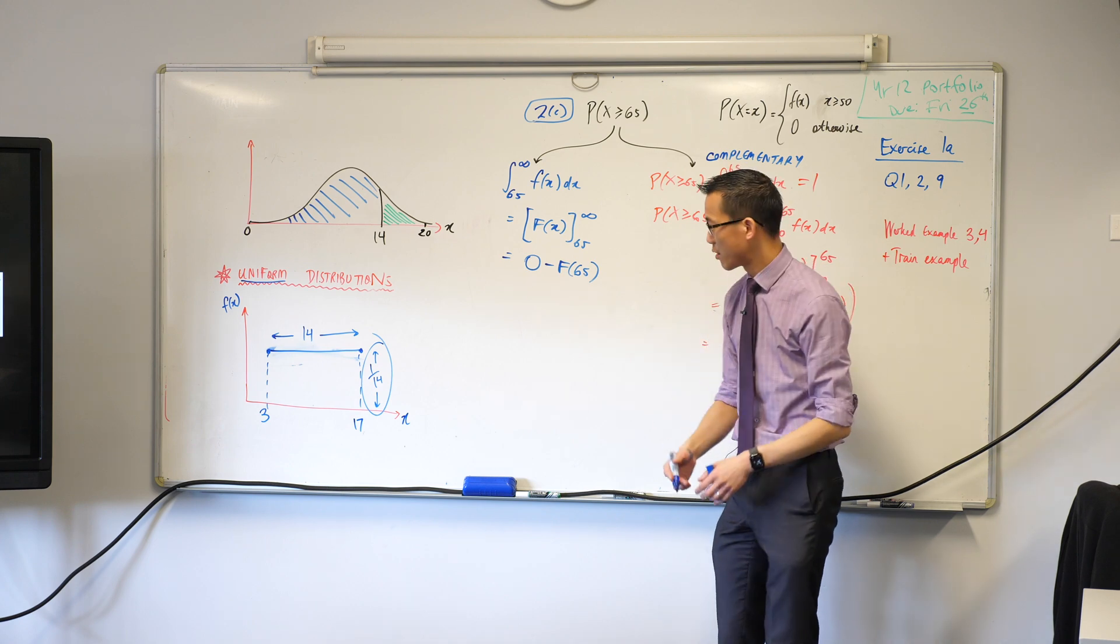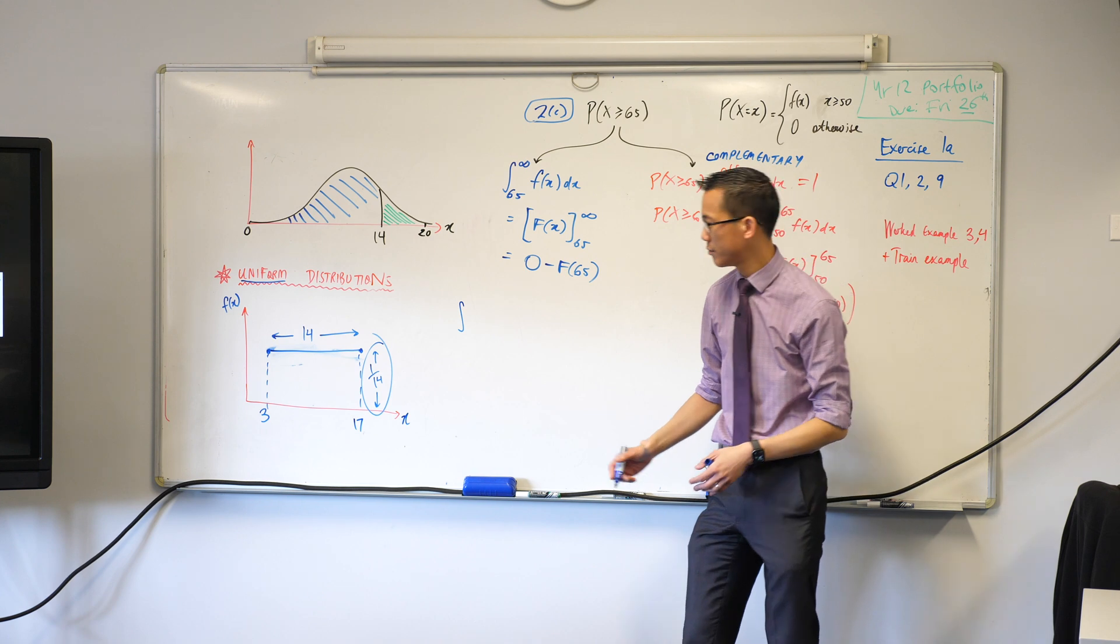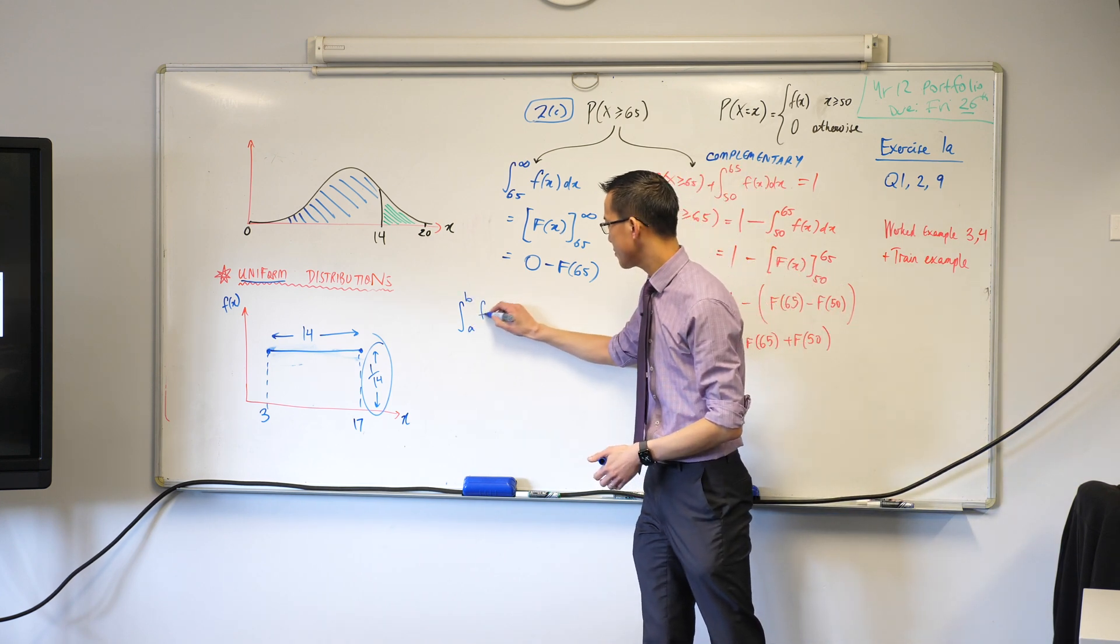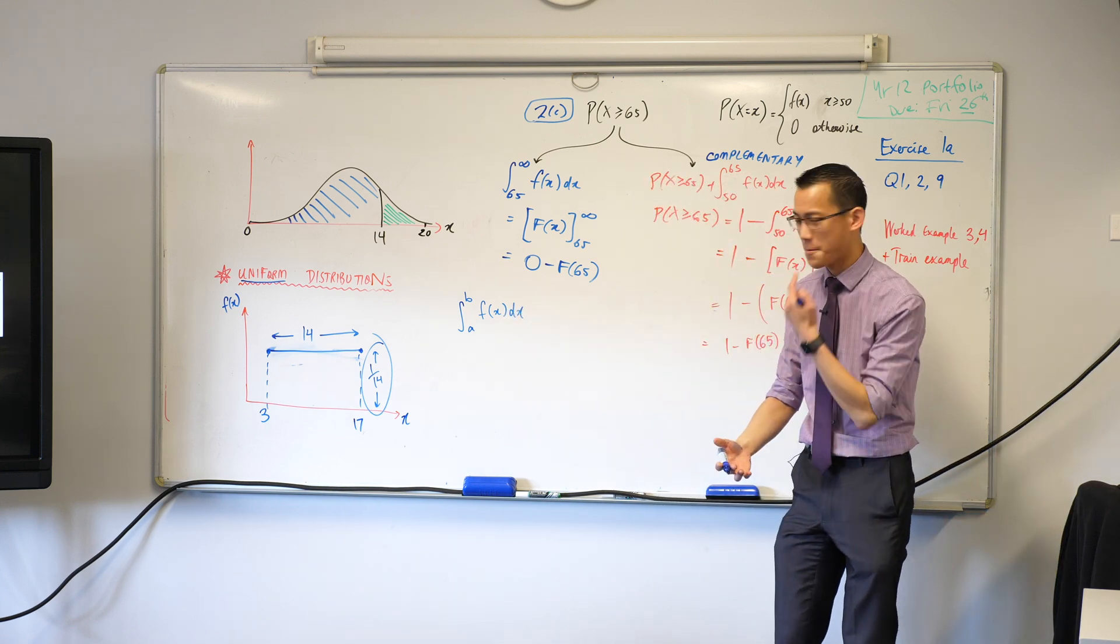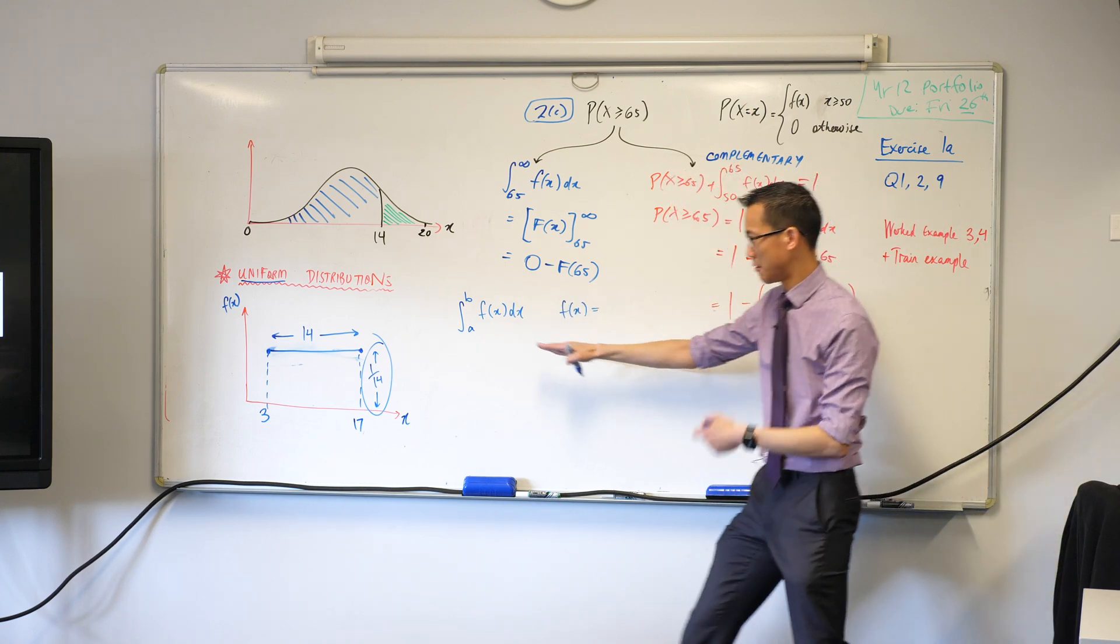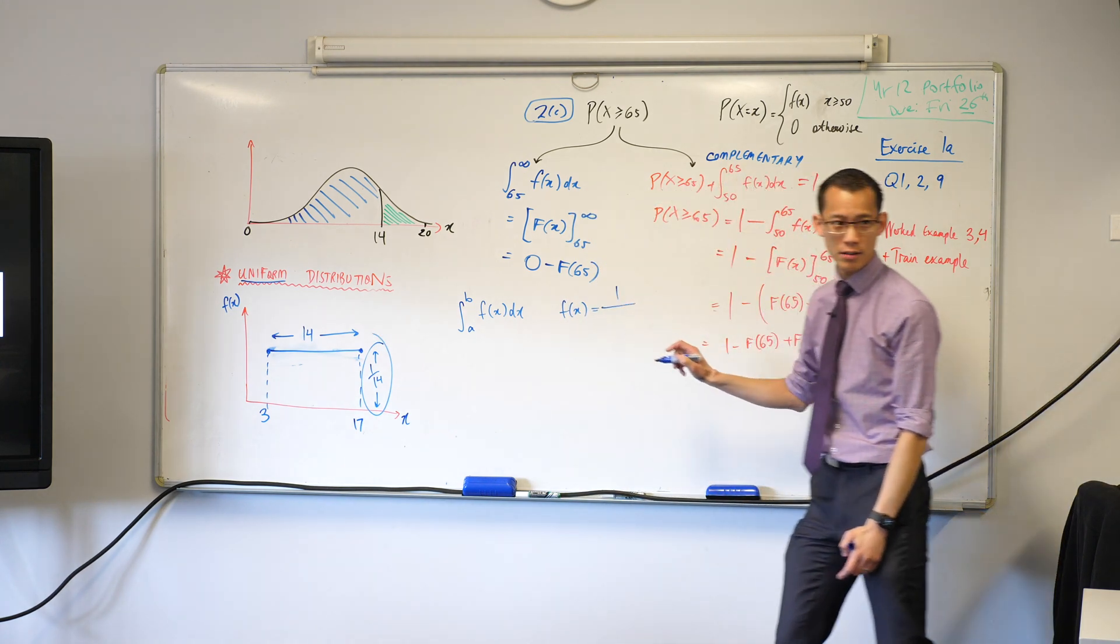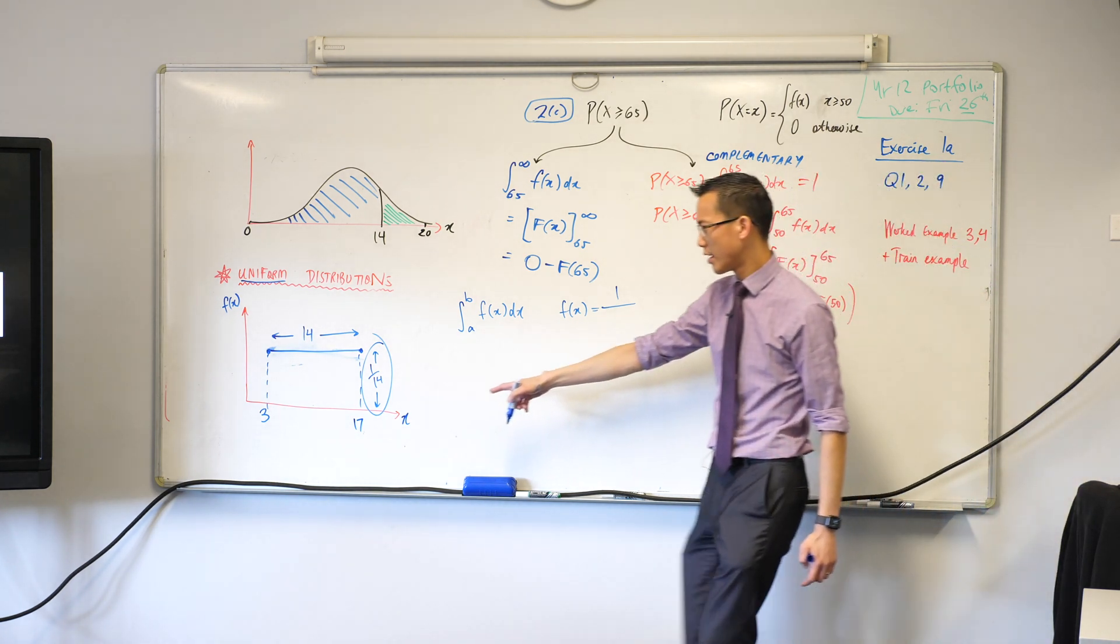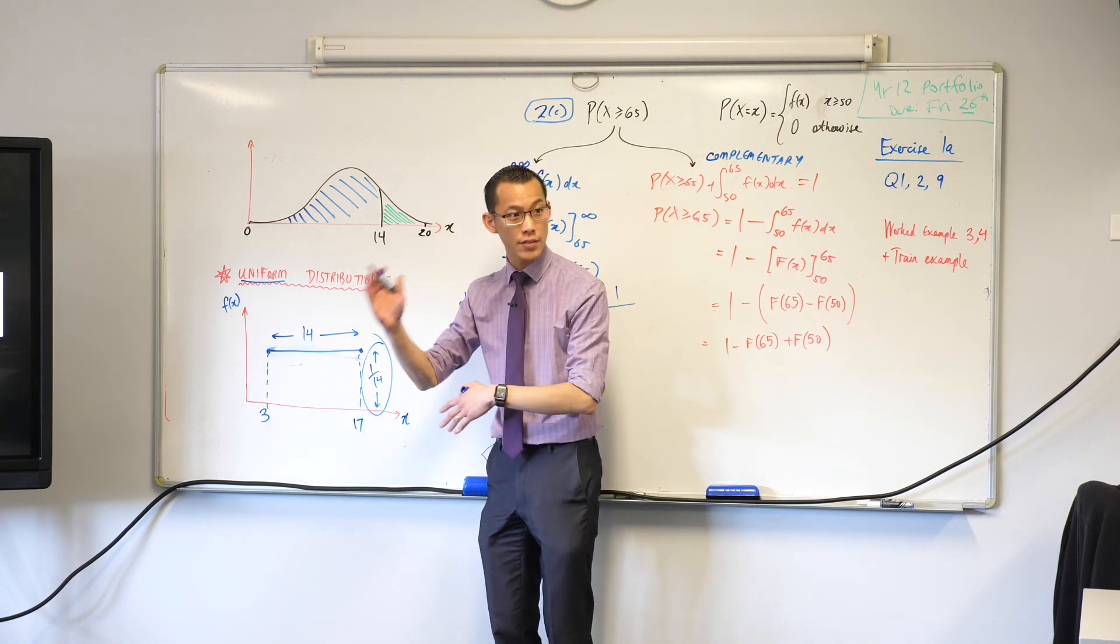So therefore, we can generalise this. We can say, if you have some probability density function that's defined between A and B, and if it's uniform, what is that f(x) going to be? The f(x) is going to be equal to this horizontal line. It's 1 over, how do we get 14 again? Where did that come from? It came from this distance, or difference, I should say. 17 take away 3.